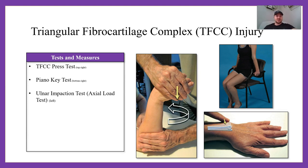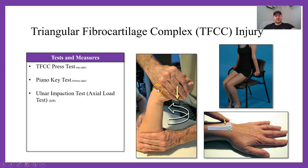For special tests: the TFCC press test has the patient try to push up out of a chair. We also have the piano key test, where you press on the distal ulna and that force may cause discomfort. And the ulnar impaction test — elbow flexed to 90 degrees, pronated, taken into ulnar deviation with axial compression applied and then rotation. This is similar to a Thessaly's test for the meniscus, which we'll go over next term.